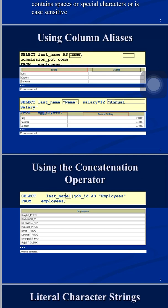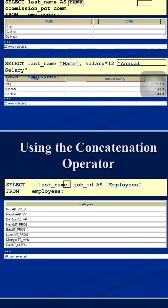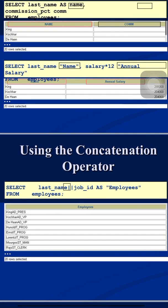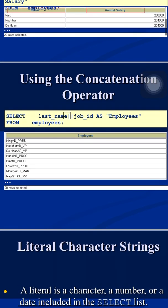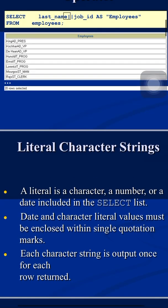We also have the concatenation operator, which is the double pipe symbol (||). It can be used to concatenate values from two columns. For example: SELECT last_name || job_id AS employees FROM employees. The last_name and job_id values are concatenated and printed as a single value. When working with these operators, we can also use literals — characters, numbers, or dates. Character and date literals are enclosed in single quotation marks in Oracle.